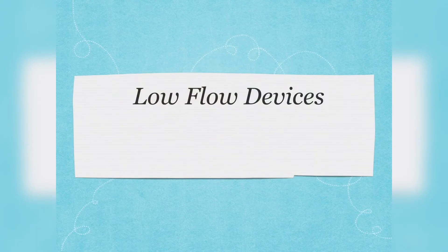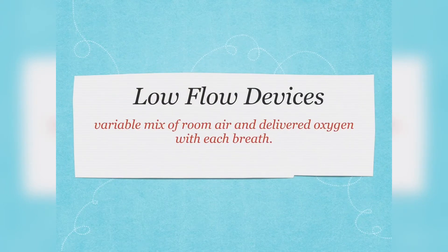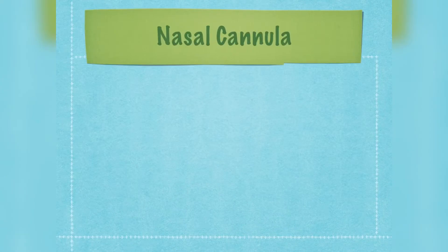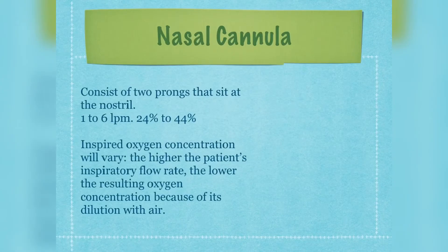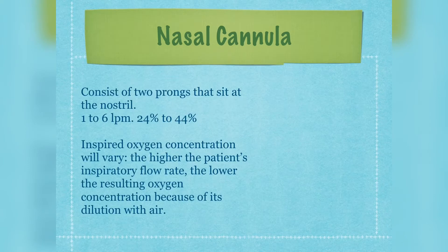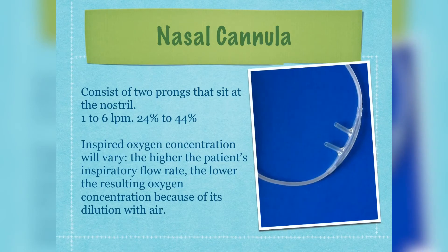Delivery devices. Low-flow devices are a variable mix of room air and delivered oxygen with each breath. Nasal cannula consist of two prongs that sit at the nostrils, delivering 1–6 liters per minute, approximately 24–44%. Inspired oxygen concentration will vary — the higher the patient's inspiratory flow rate, the lower the resulting oxygen concentration, because of its dilution with air.